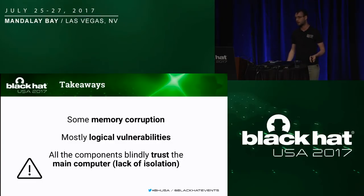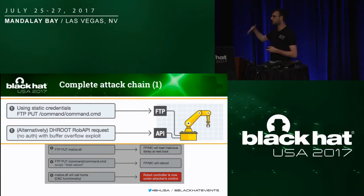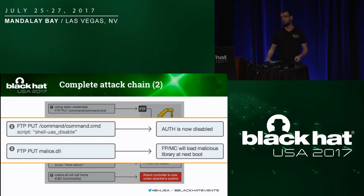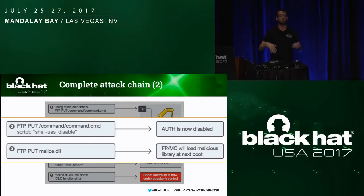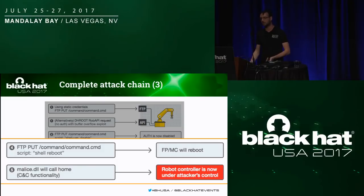Just a single stack overflow vulnerability in a poorly audited service of the main computer lets you compromise all components running on the entire robot controller, because the components trust each other. To wrap up: we are now able to completely compromise the controller by connecting via FTP or the RobAPI and exploiting either the static credentials with remote command execution, or one of the memory corruption vulnerabilities to execute arbitrary code. Once we can execute arbitrary code, we can call the function to disable the UAS.